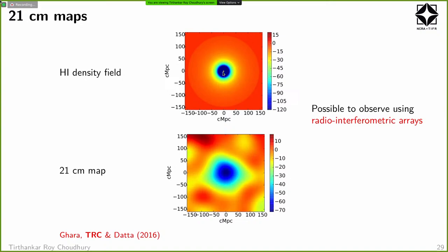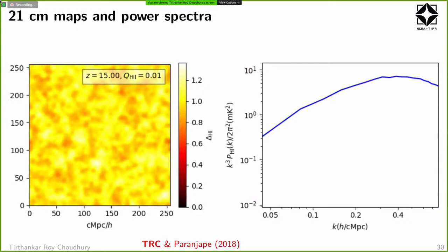You can also study fluctuations in the 21-cm signal. In an idealized scenario of a galaxy forming, it will produce 21-cm signal around it with nice features — first an absorption (blue) region around the galaxy, and then emission further away. These fluctuating signals are possible to observe using radio interferometric arrays. This is a theoretical model showing the corresponding 21-cm map with the effect of the radio interferometric arrays included — you see the signal is distorted but still discernible, and this is the target of many upcoming experiments.